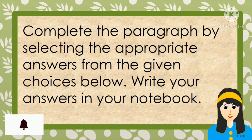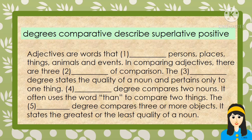For the last learning task, complete the paragraph by selecting the correct answer from the choices: degrees, comparative, described, superlative, and positive. 'Adjectives are words that ___ persons, places, things, animals, and events. In comparing adjectives, there are three ___ of comparison. The ___ degree states the quality of a noun and pertains only to one thing. The ___ degree compares two nouns and uses the word than. The ___ degree compares three or more objects and states the greatest or least quality of a noun.'